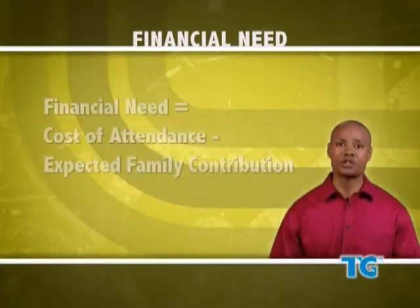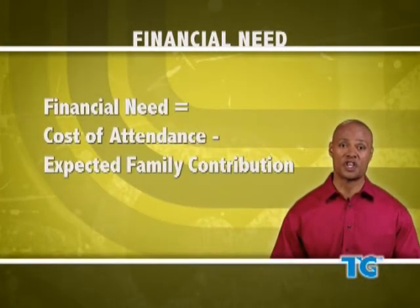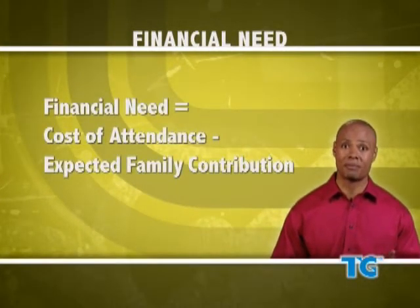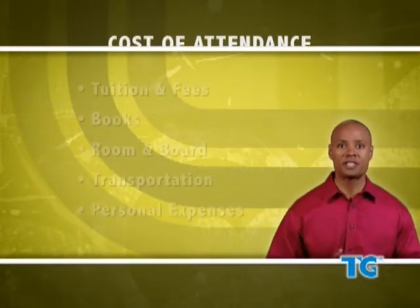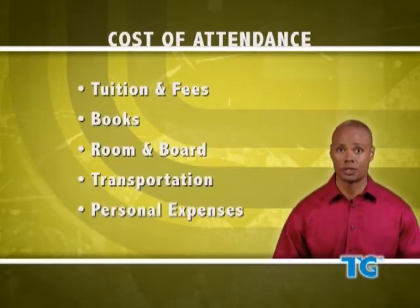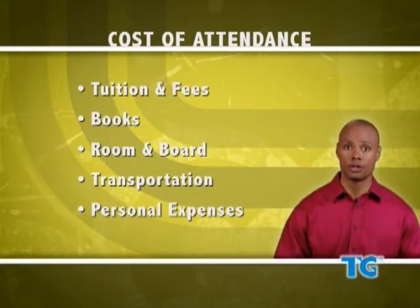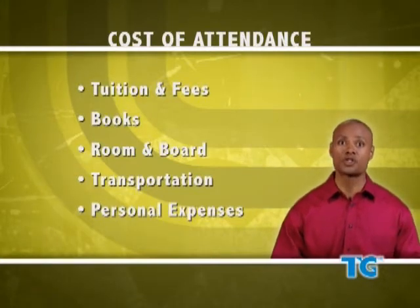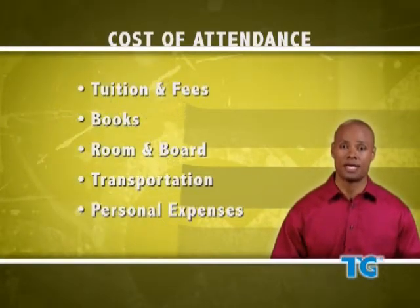Financial aid administrators receive information from the Department of Education to help determine your financial need. Financial need is the school's cost of attendance minus the expected family contribution. Cost of attendance includes tuition and fees, books, room and board, transportation, personal expenses, and other school-related costs.